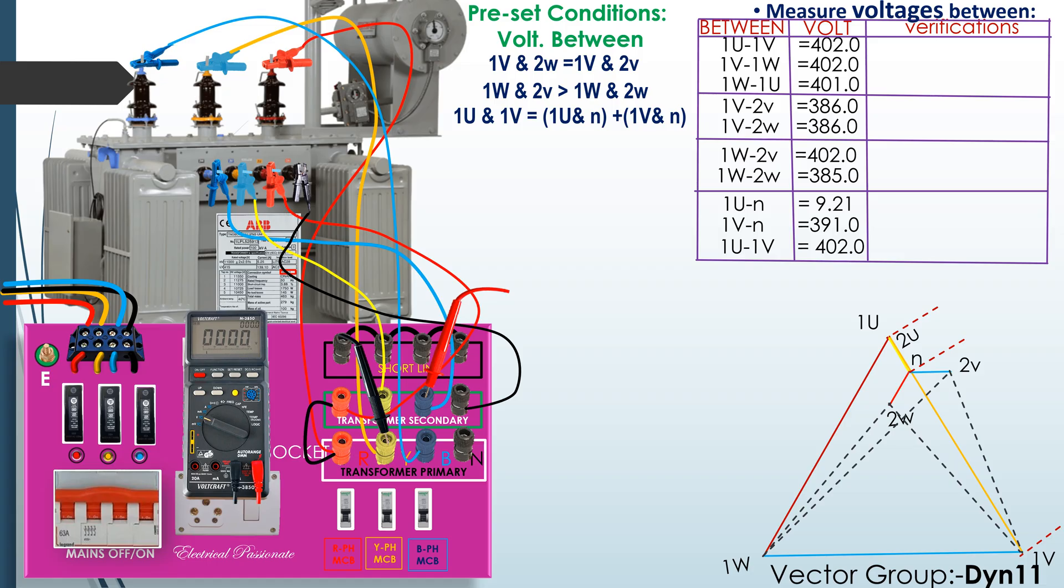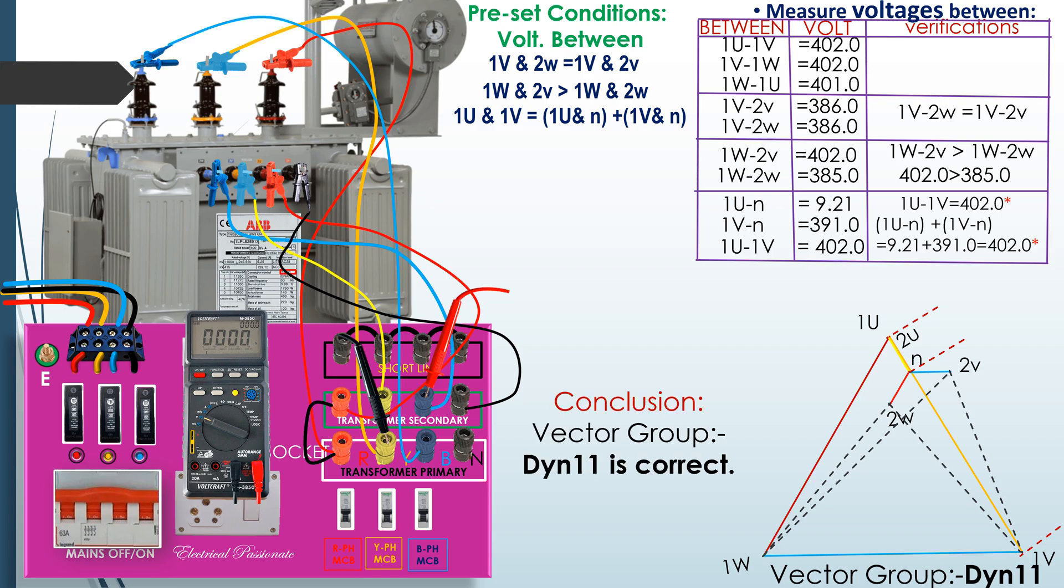Verify the obtained voltages with the preset conditions. The conditions are satisfied, so the vector group DYN11 is correct.